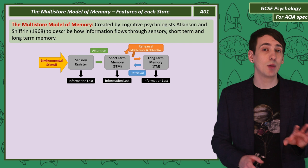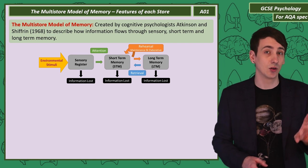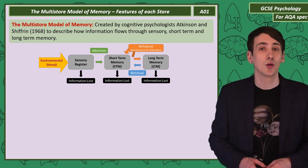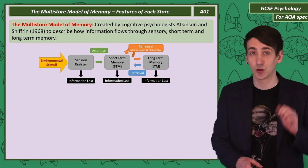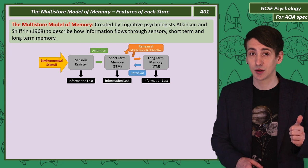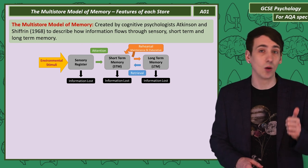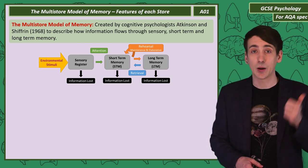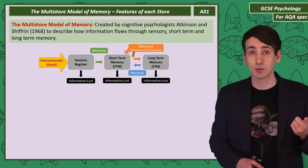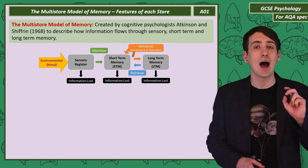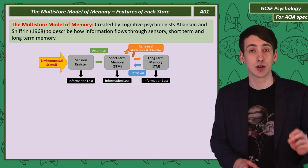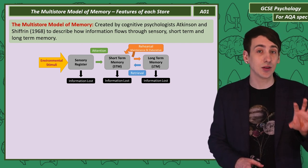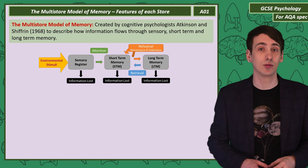Now what we need to know about these three stores are their features. We might be asked about how the information is coded — so what form the information takes. The capacity — so how much the store can hold. And the duration — so how long that store can hold information.